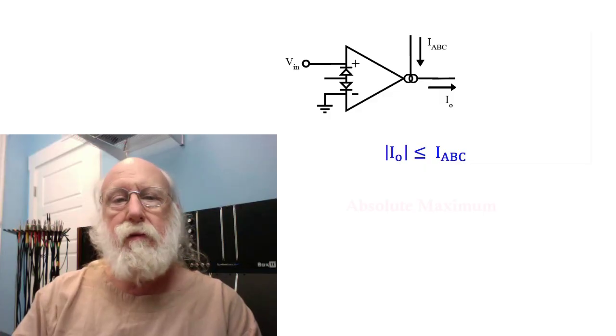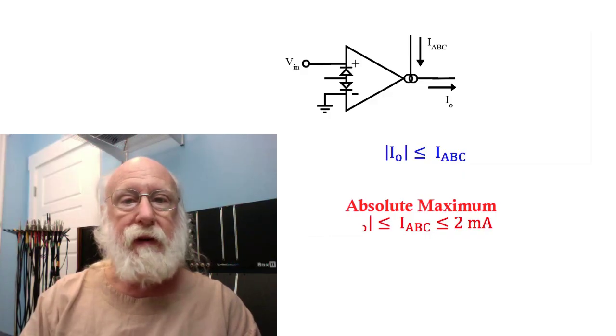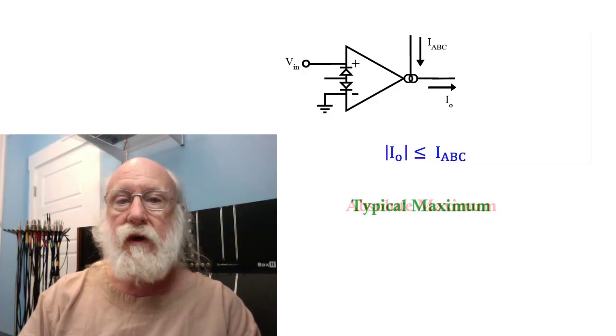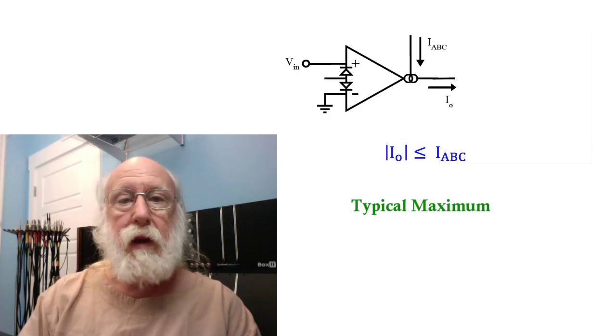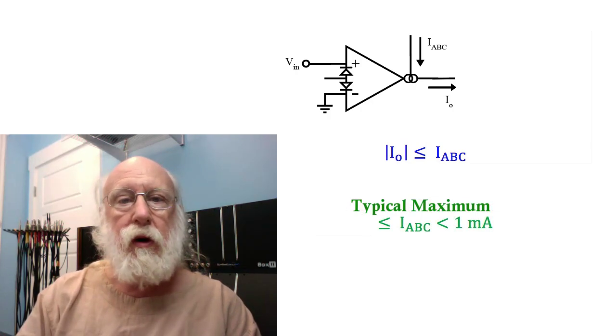Since the absolute maximum of the amplifier bias current is 2 milliamps, that puts an absolute maximum upper limit on our output current. More typically, however, you want to keep IABC below 1 milliamp, and so that would then be your upper limit on the magnitude of the output current.